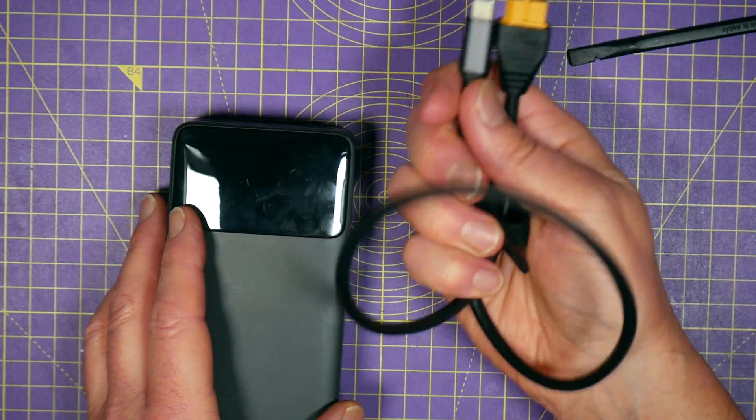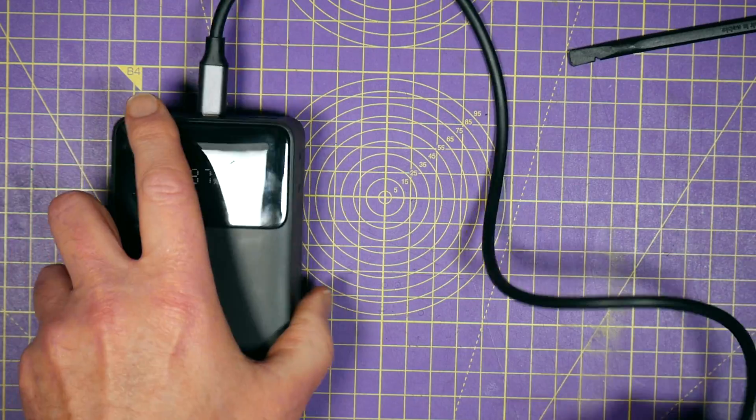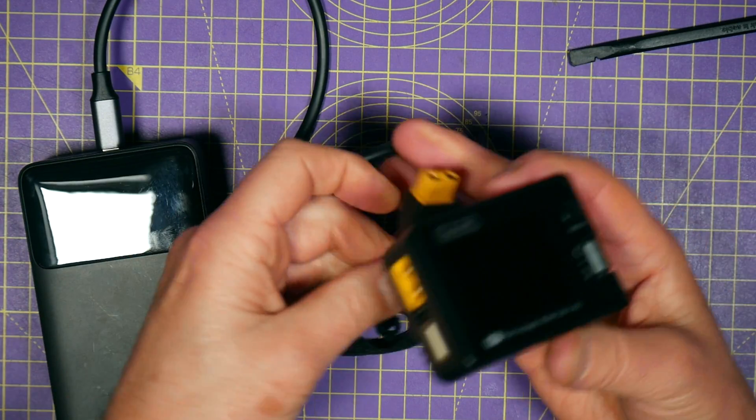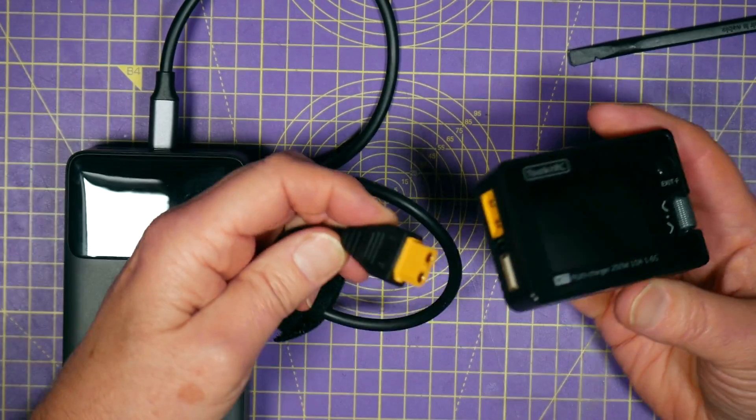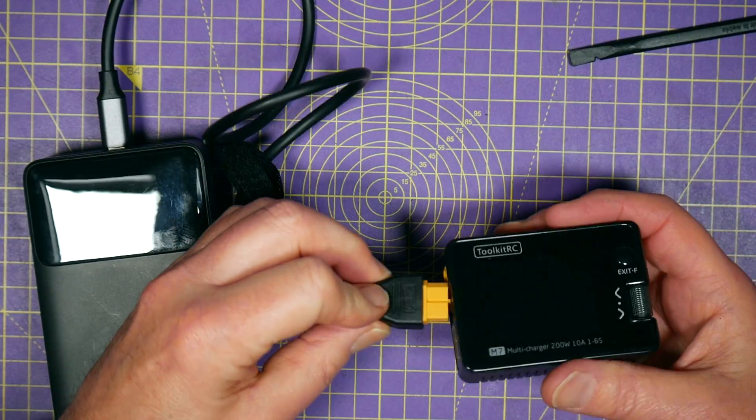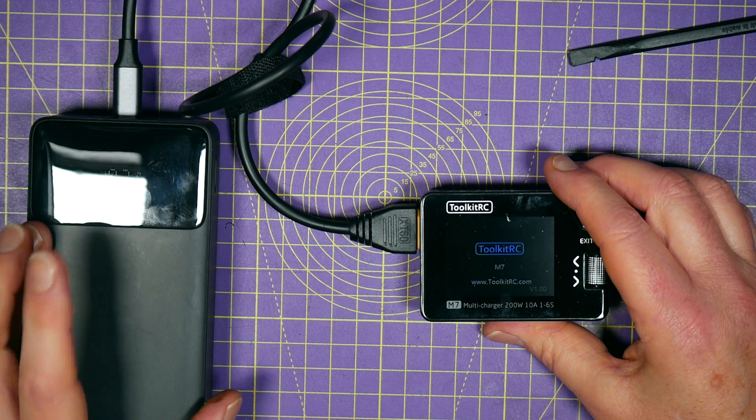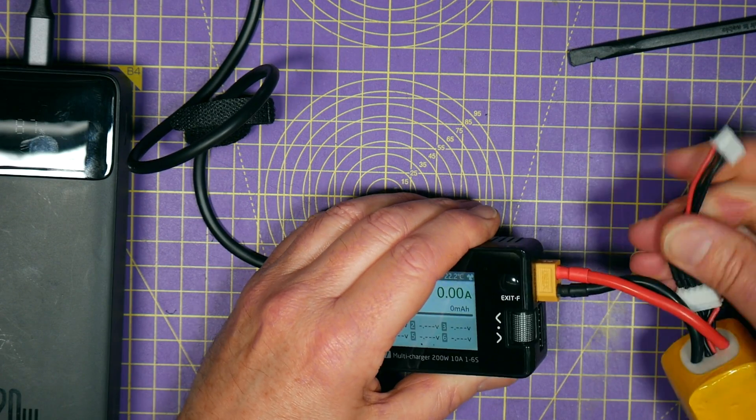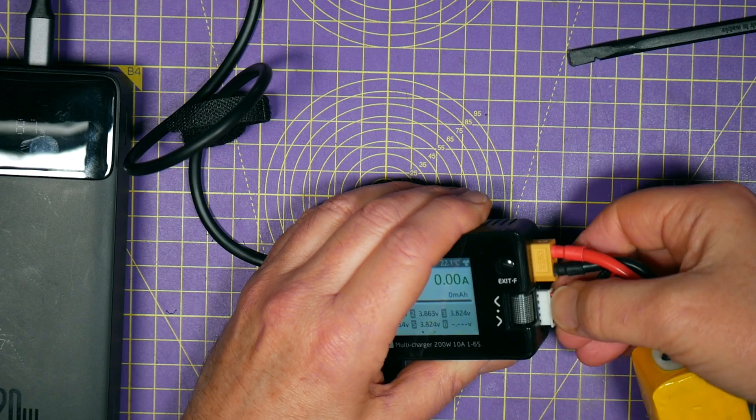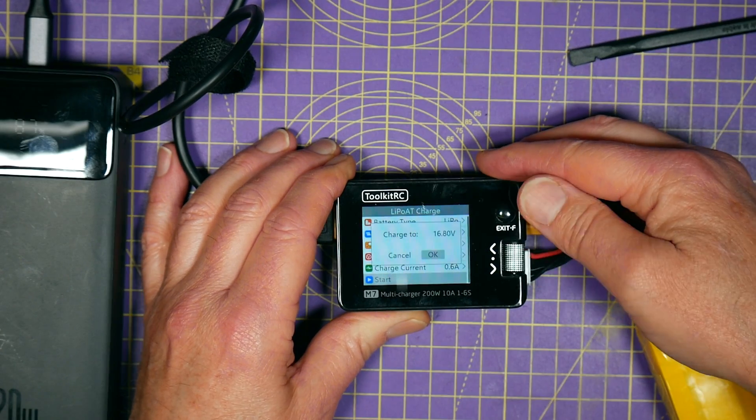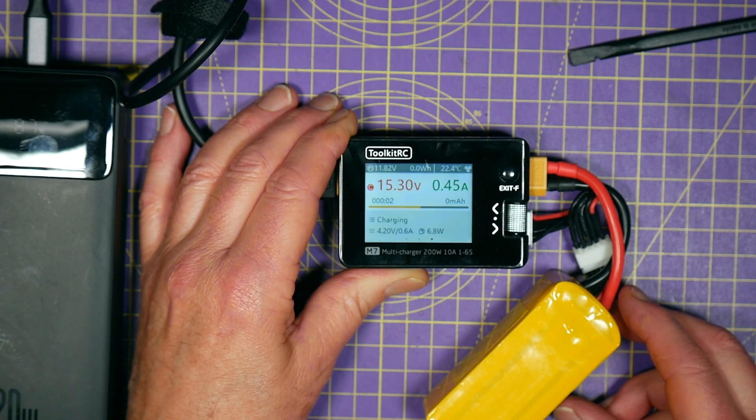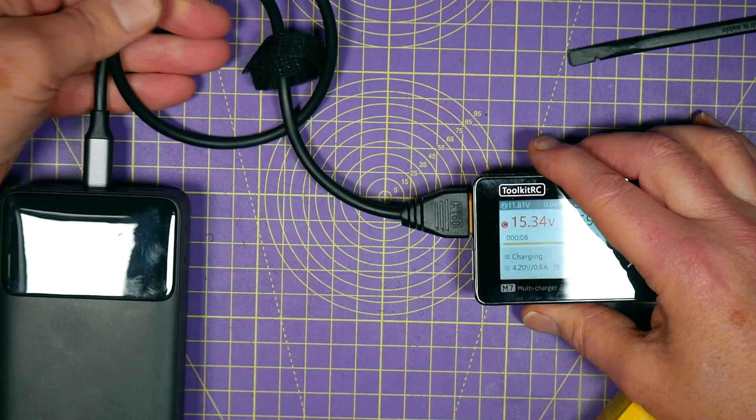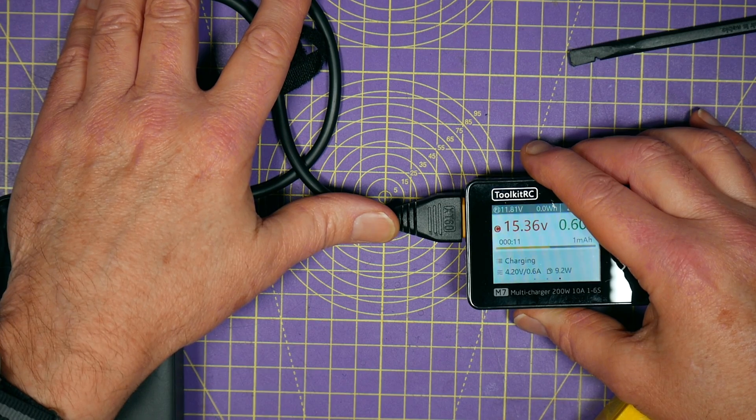So, that means with this clever little lead, I can plug this into a USB power pack. I've got a toolkit RC M7 charger here. And if I get the right way around, I can power this off this USB power pack. And that means that I could plug a battery in here and charge that up the right way around. Fantastic. So, this power pack is charging a LiPo and that all happens because of this smart cable here. It's very clever.